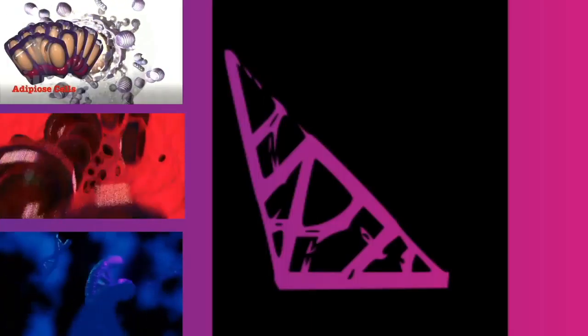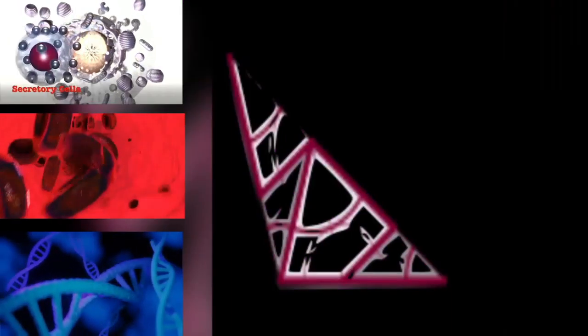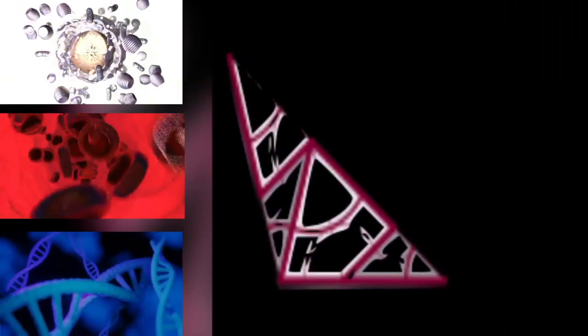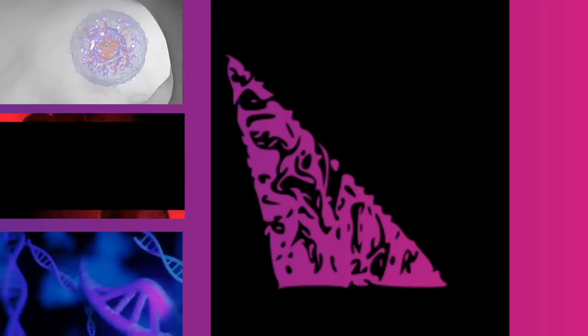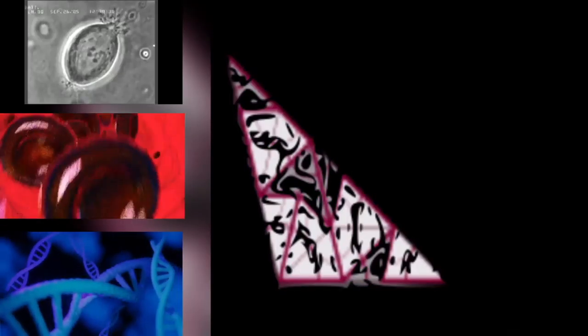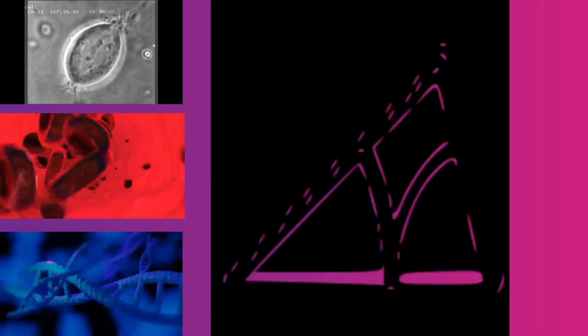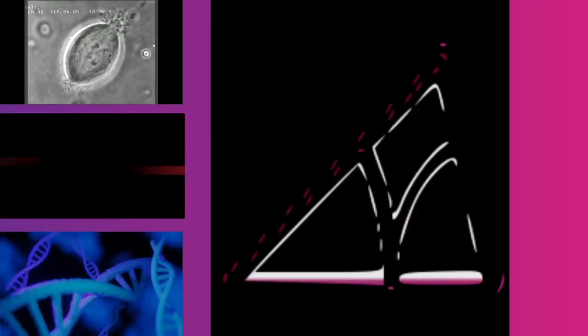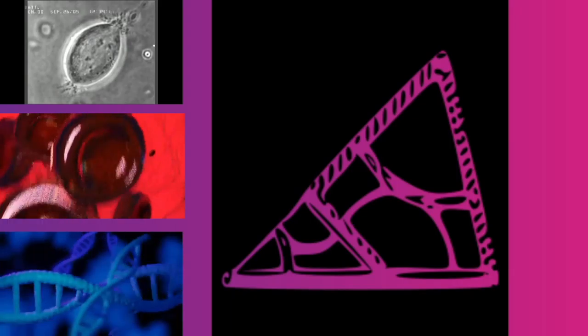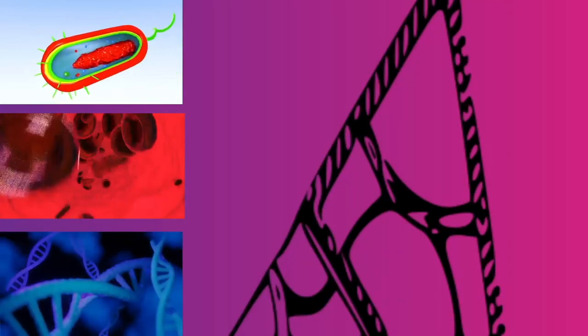After the microtubules have located and attached to the kinetochores in prometaphase, the two centrosomes begin pulling the chromosomes towards opposite ends of the cell. The resulting tension causes the chromosomes to align along the metaphase plate or equatorial plane, an imaginary line that is centrally located between the two centrosomes at approximately the midline of the cell.